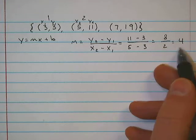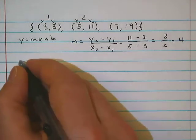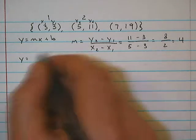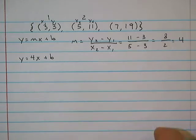So m is 4. So now I'm going to take my m value, 4, and substitute it into this equation. Y equals 4 times x plus b.